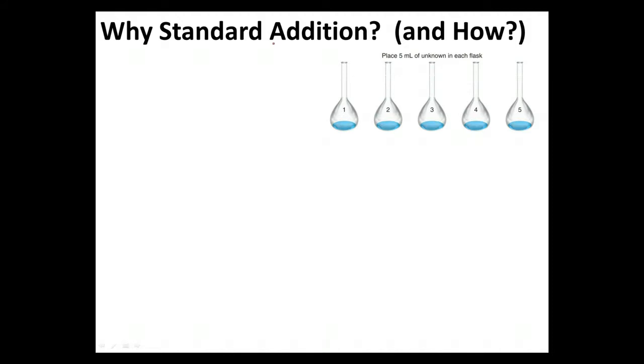Now, here's the basic idea that we're going to use. We're going to take 5 milliliters, or however much volume, of our unknown, and we're going to put it in each of these flasks. Obviously, the values can change. I just wanted to go through an example of it, so you see exactly what we're doing.